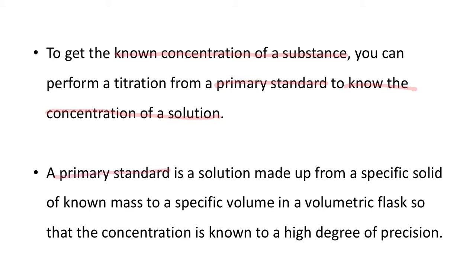A primary standard is generally a solution made up from a specific solid of a known mass dissolved to a specific volume in a volumetric flask, so that the concentration is known to a high degree of precision. You take a solid, dissolve it, and it makes a solution. If that solid has specific properties and the volume is very accurate, you will have a very high degree of precision — and hopefully accuracy — in your solution.